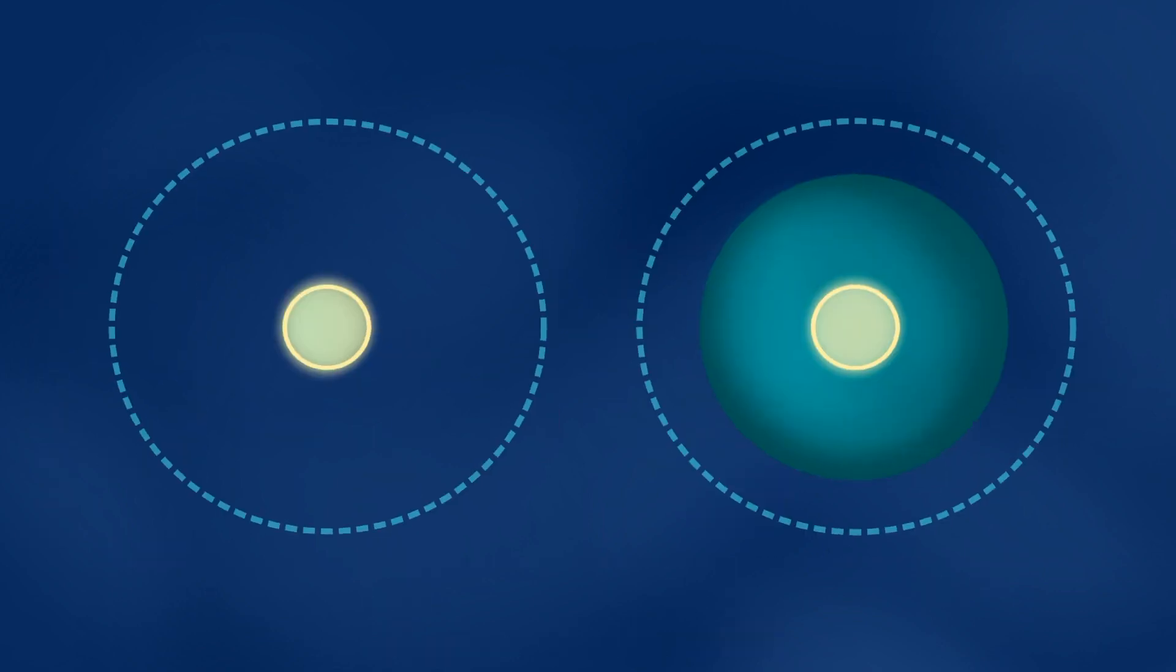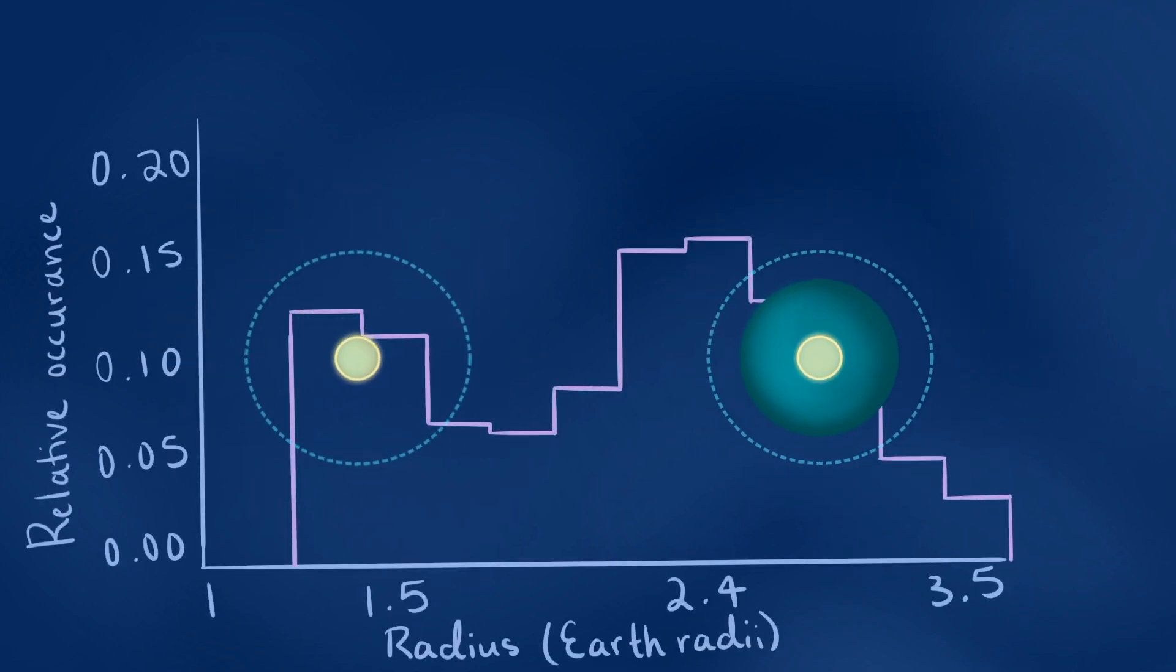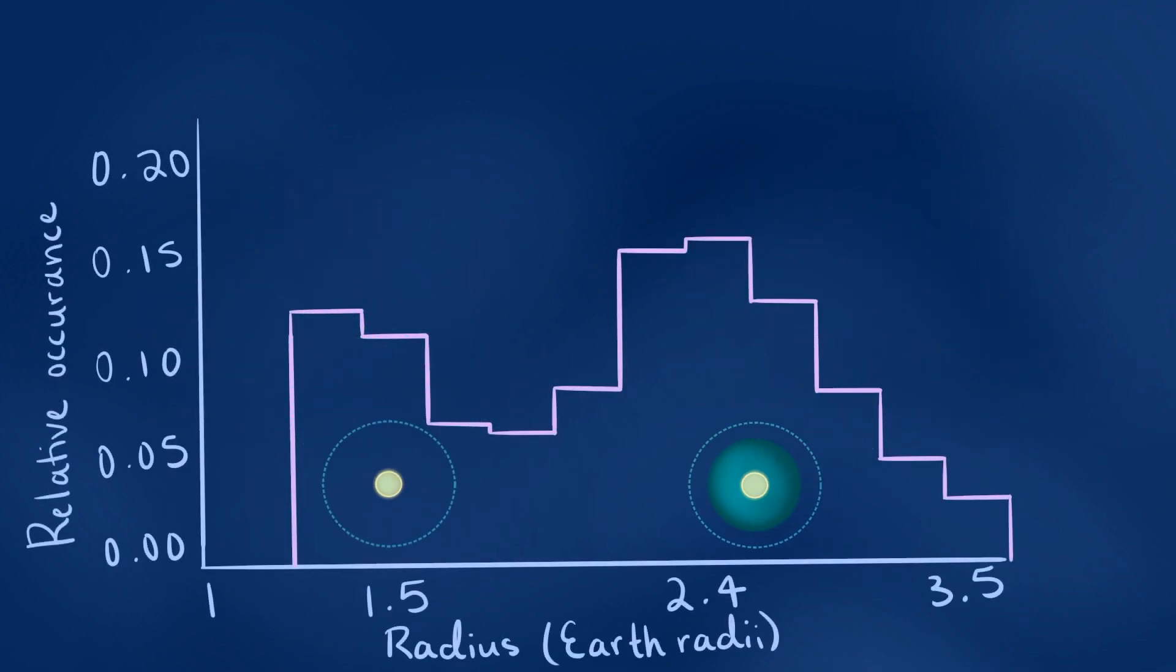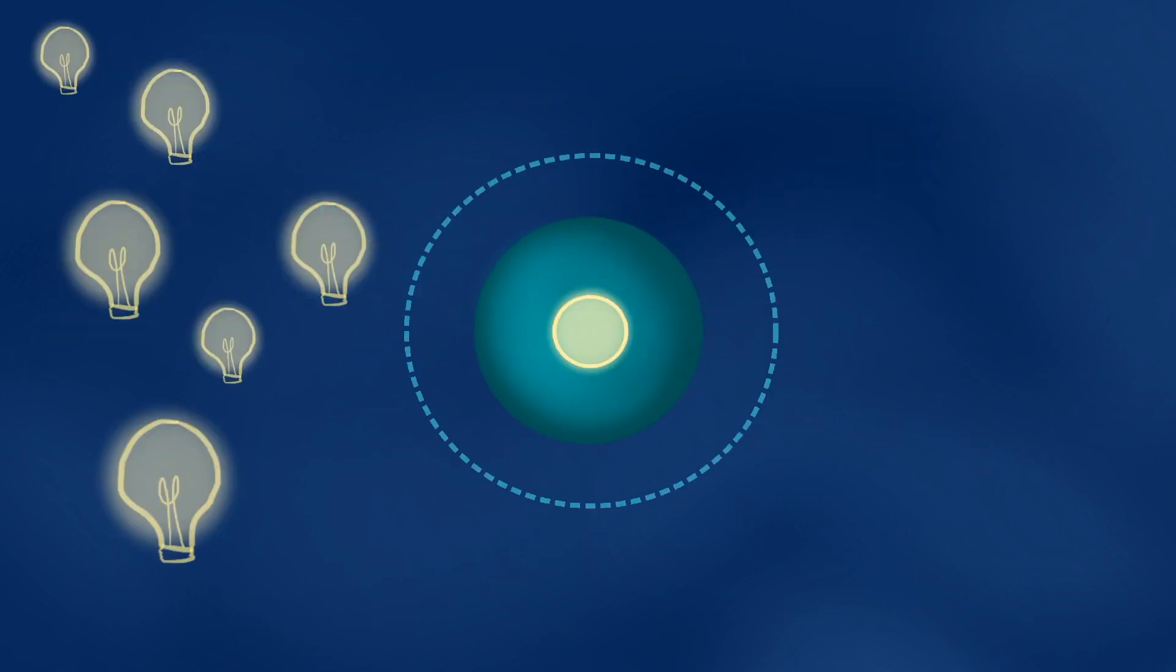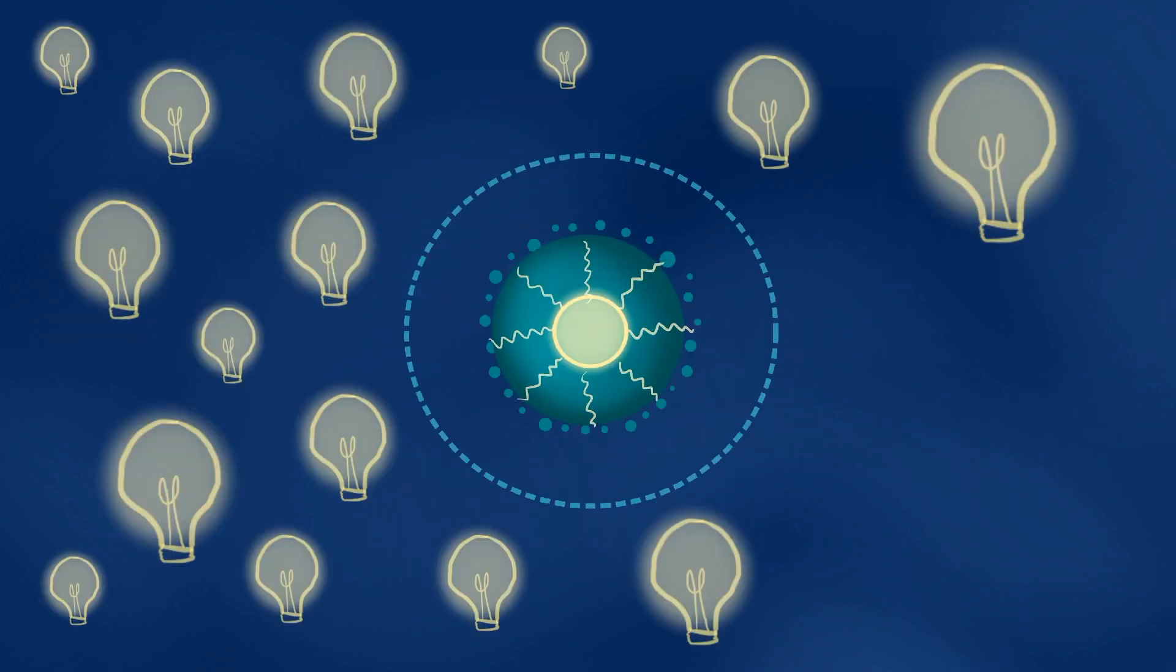This disparity in size leads to the bimodal distribution, or radius valley, that we can see in the histogram. So what do these findings tell us? Well, for one thing, they show that the radius valley can be explained by the process of planet formation itself. Additionally, using the core-powered mass loss model, we can make a series of observational predictions.